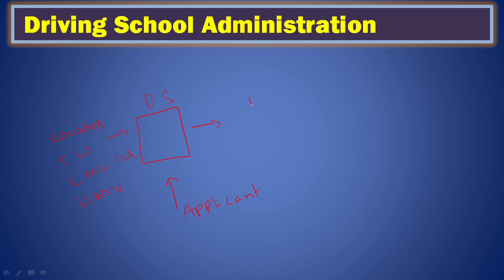The applicant will enquire and then join a particular course. The school collects all their data, including for government filing purposes, and then enrolls them in the course. After that, the applicant makes a fee payment. Based on the collected data, we generate reports: a join list, a payment list, and a course list.